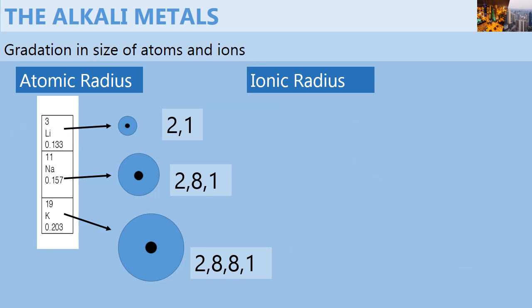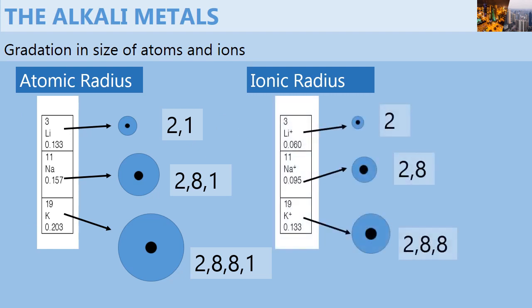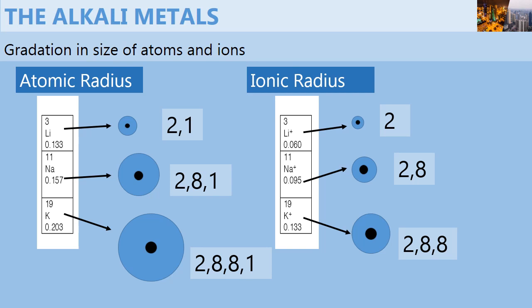The ionic radius also increases down the group, for the same reason — there is an increase in the number of occupied energy levels as we move from lithium ion to potassium ion. Lithium ion has one occupied energy level, sodium ion has two, while potassium ion has three.